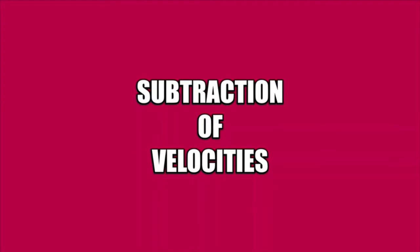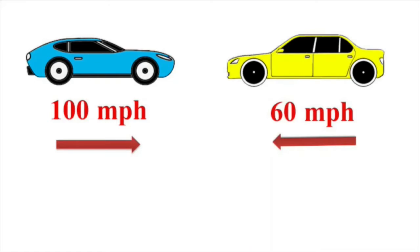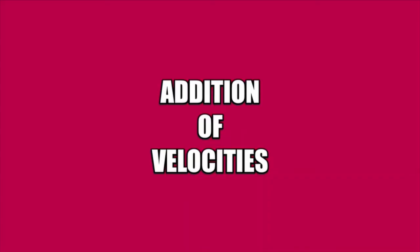This is from the subtraction of velocities. Now imagine the blue car again moving at 100 miles an hour, and a yellow car moving in the opposite direction at 60 miles per hour. The relative speed now is 100 plus 60, which equals 160 miles per hour. This is the addition of velocities.